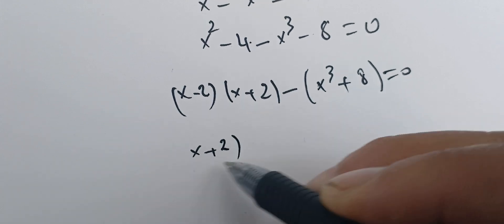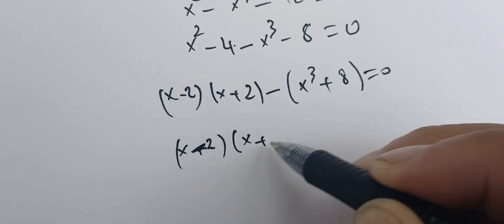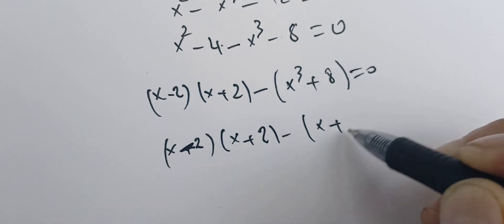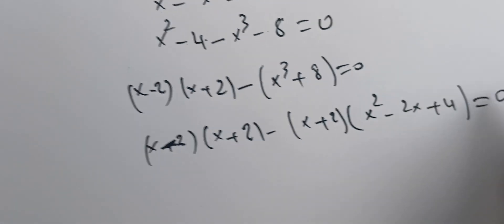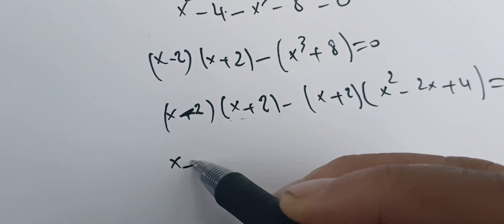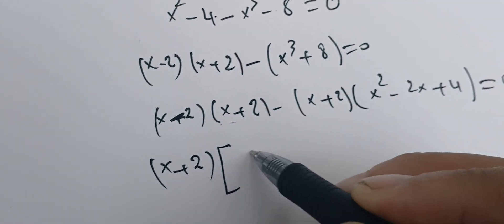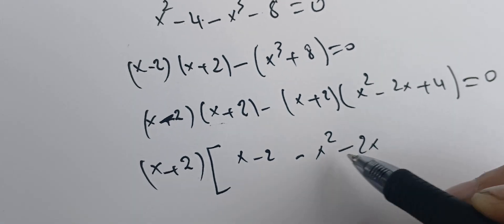Now we have x plus 2 times x minus 2, and then minus x squared minus 2x plus 4 equals zero. Now we have this factor x plus 2, we'll take it outside. We have x minus 2 minus x squared minus 2x plus 4 equals zero.